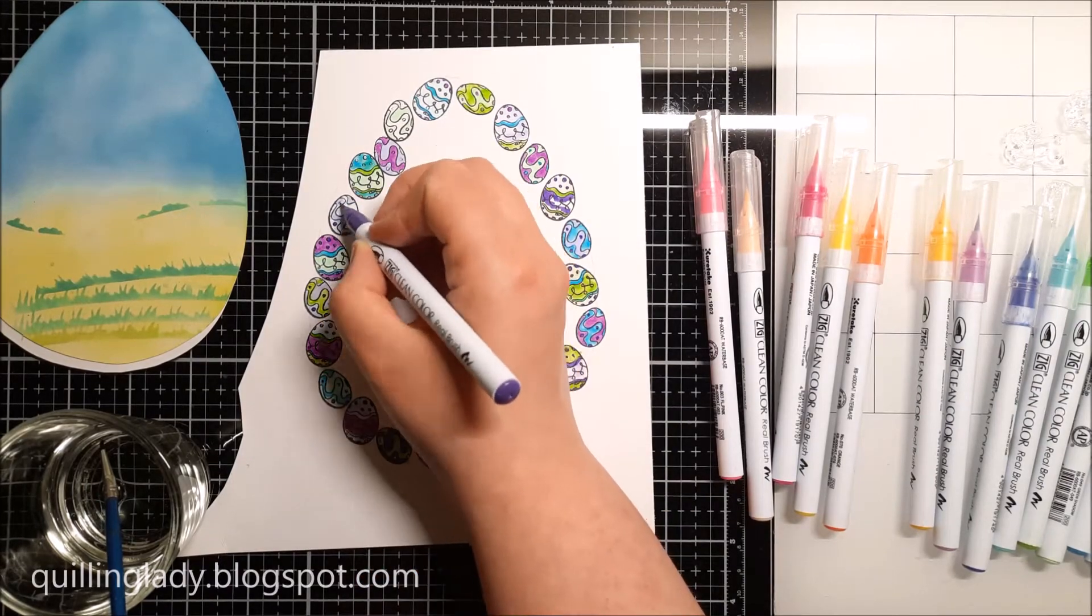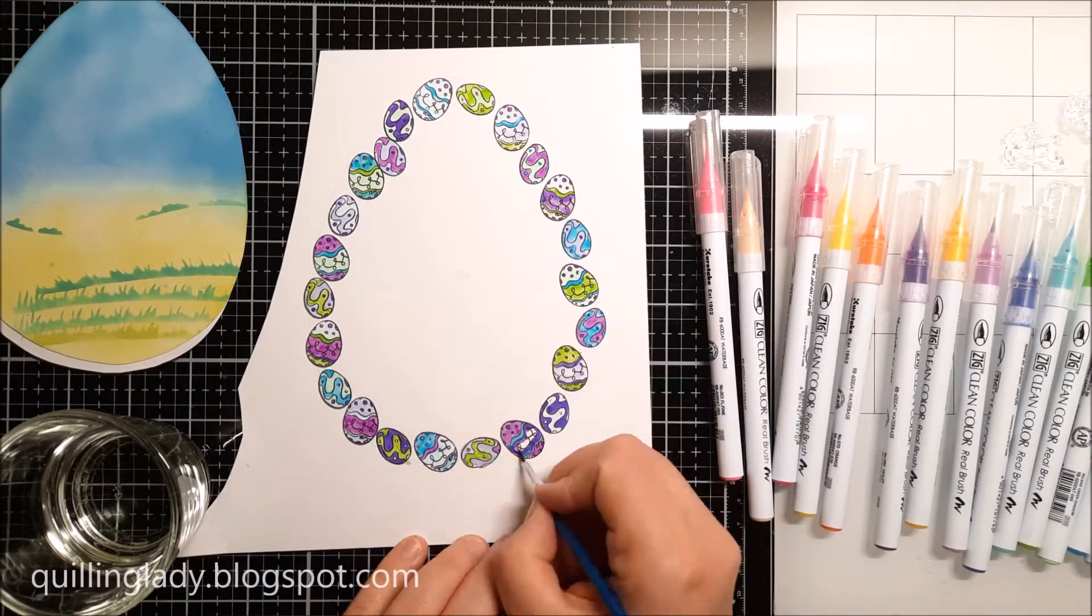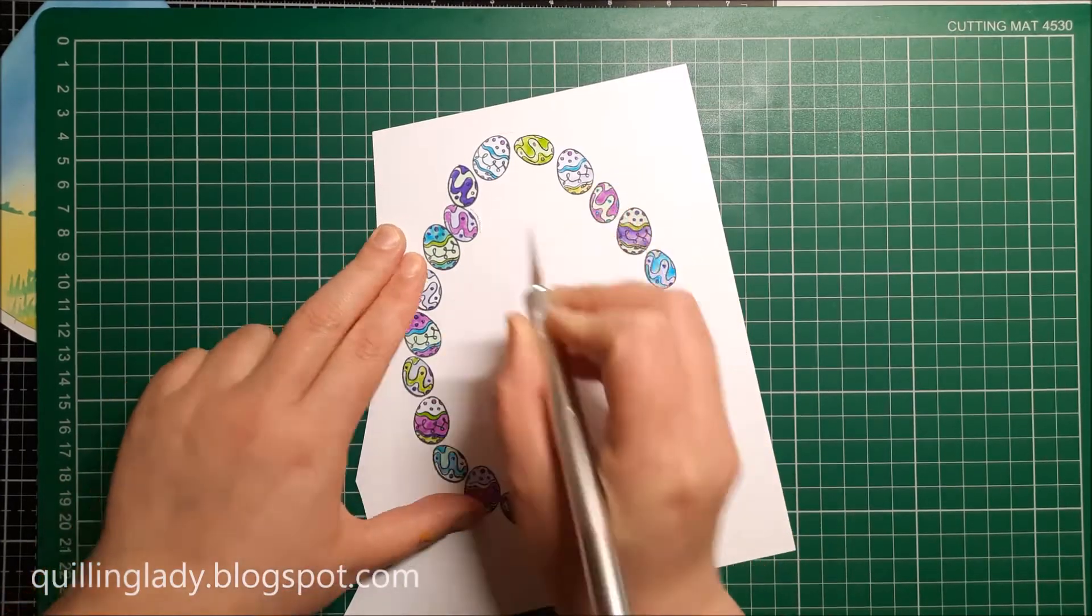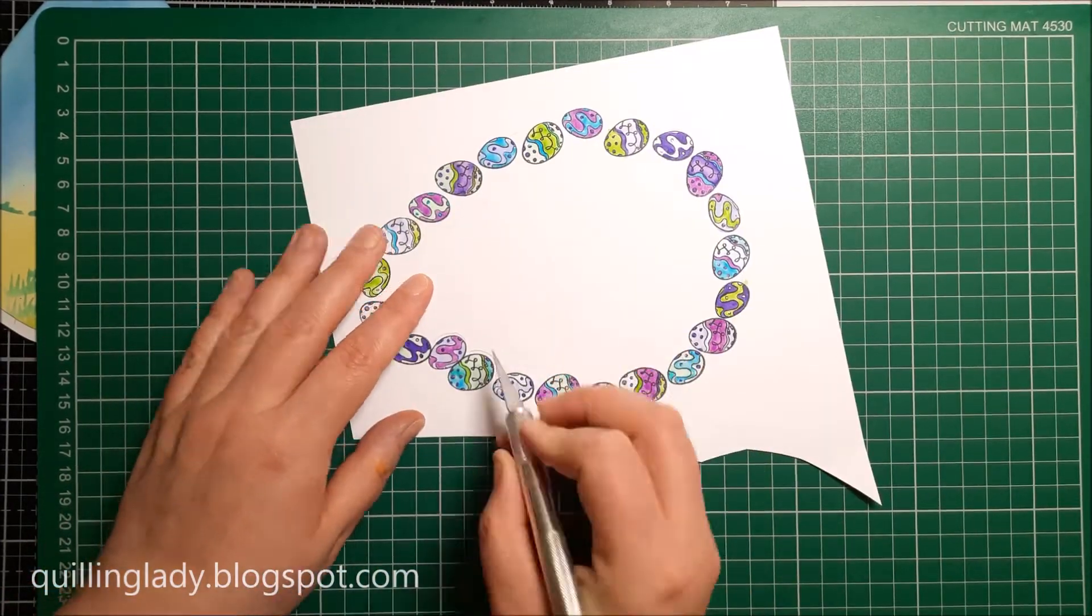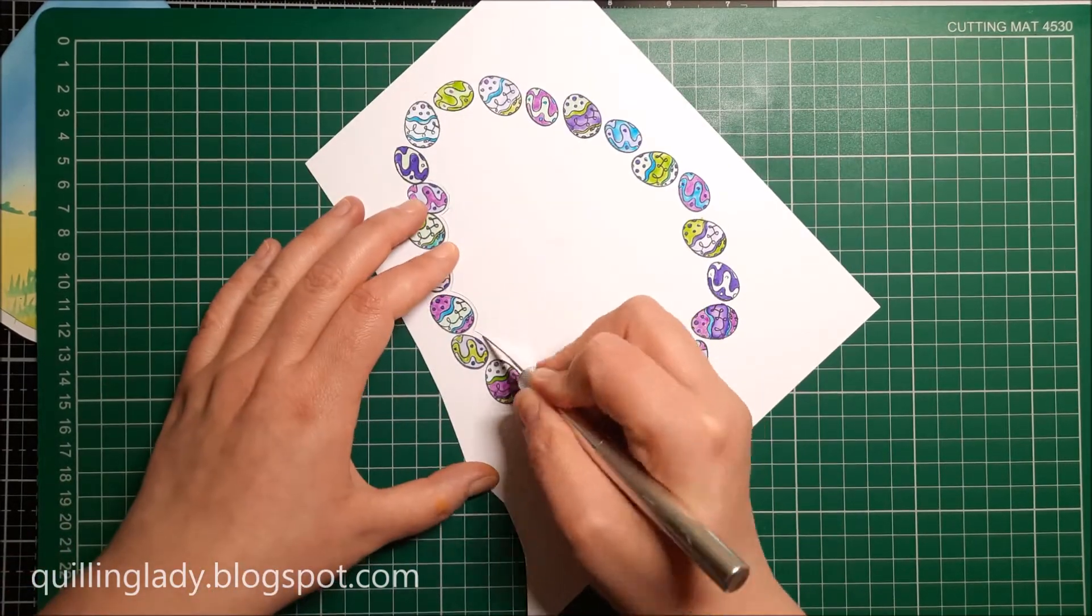My very big tip: whenever you color small images like these, I really suggest that you use the darkest color at the very end for some small details.